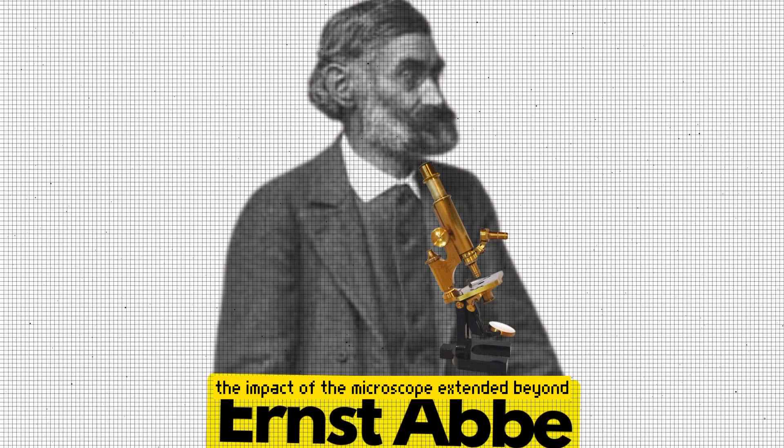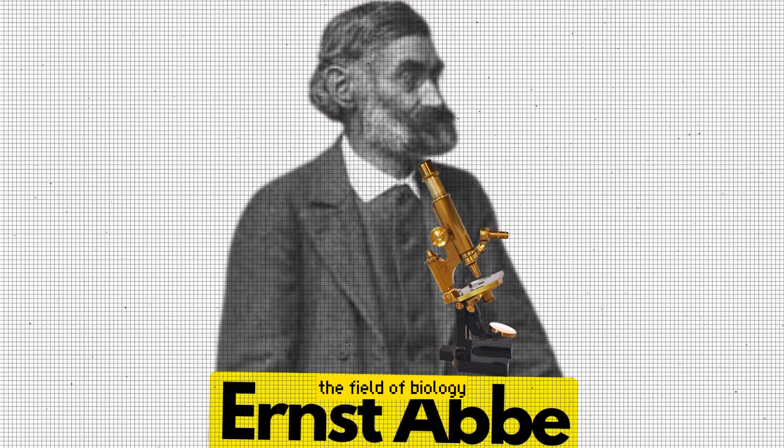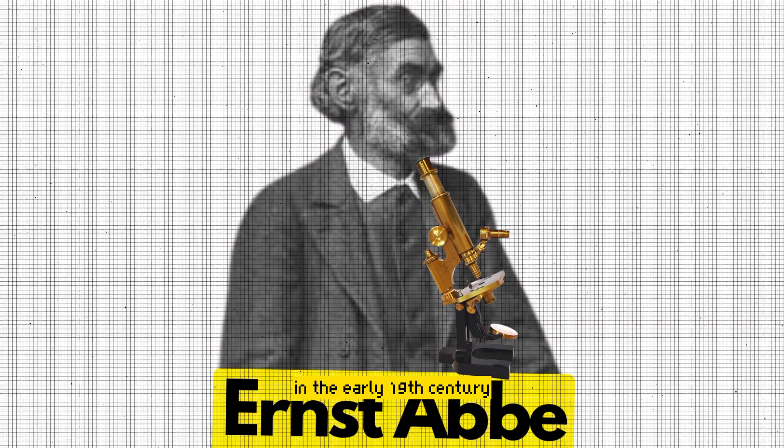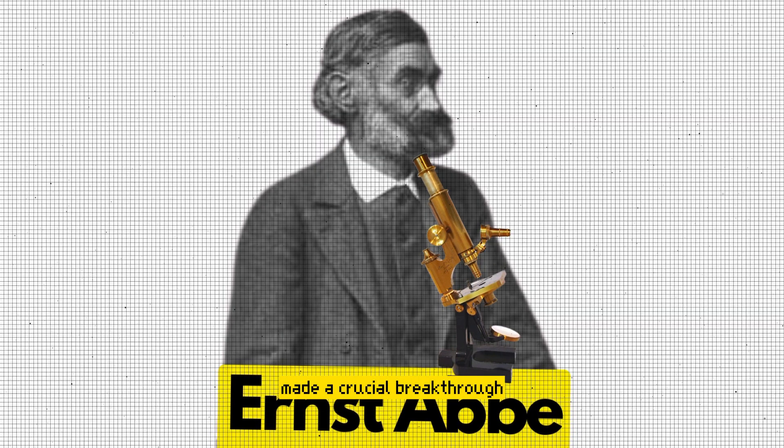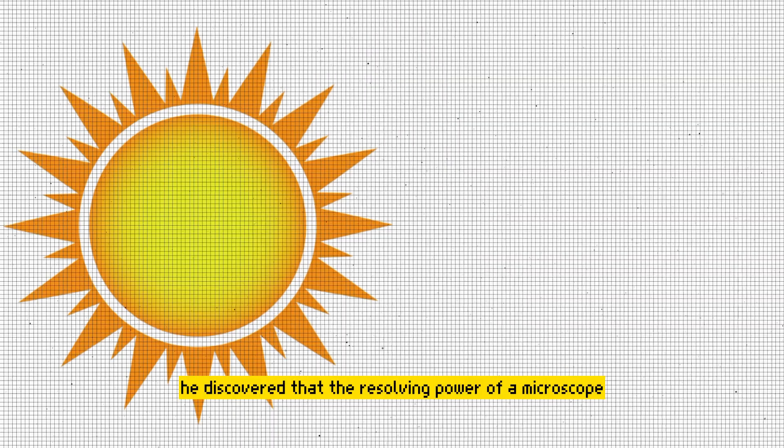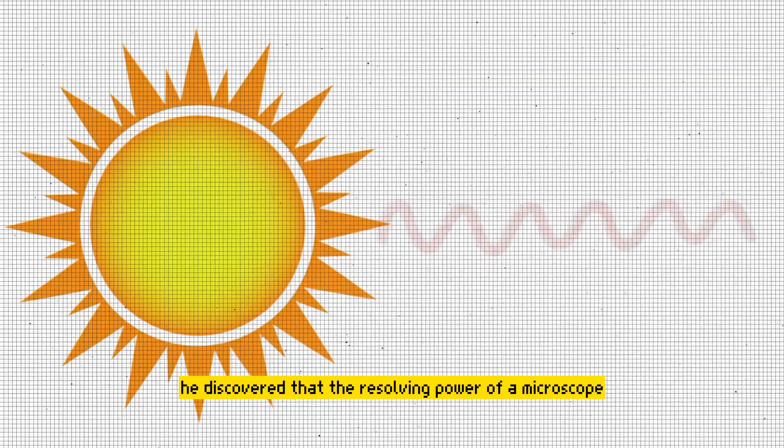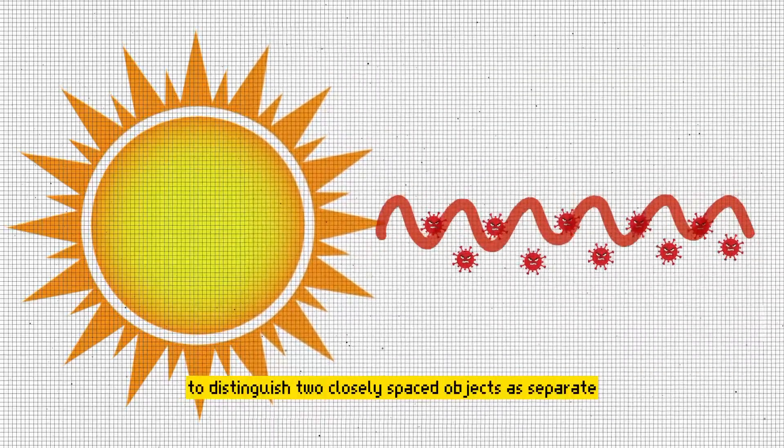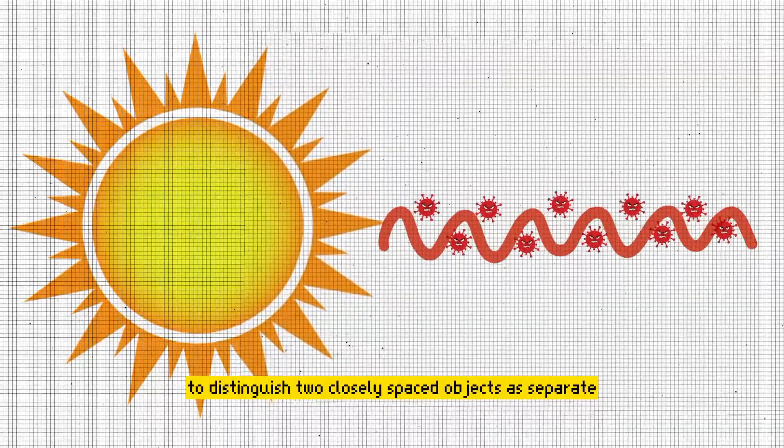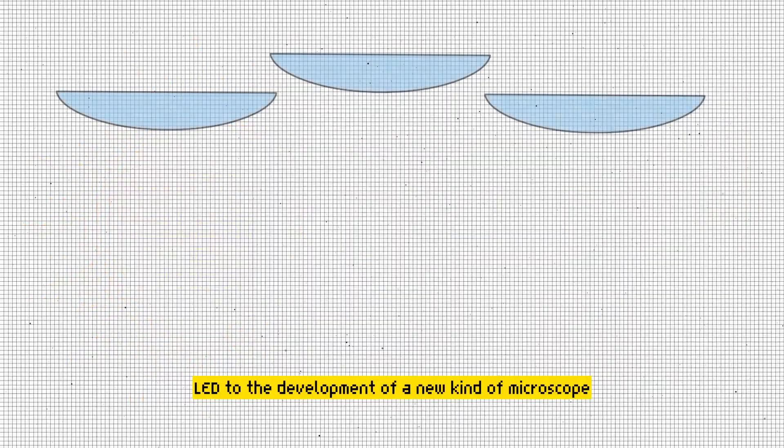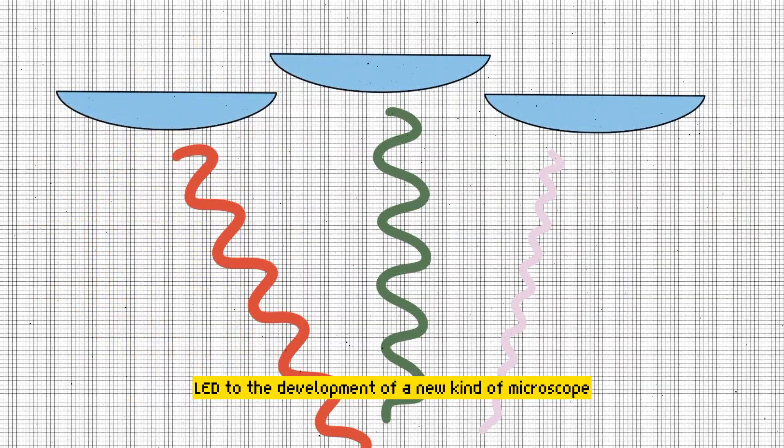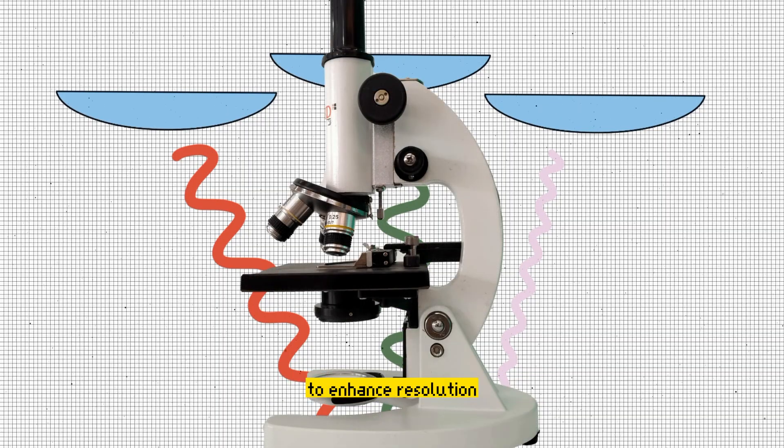The impact of the microscope extended beyond the field of biology. In the early 19th century, a German physicist named Ernst Abbe made a crucial breakthrough. He discovered that the resolving power of a microscope—the ability to distinguish two closely spaced objects as separate—was limited by the wavelength of light. This realization led to the development of a new kind of microscope, known as the compound light microscope, which used different wavelengths of light to enhance resolution.